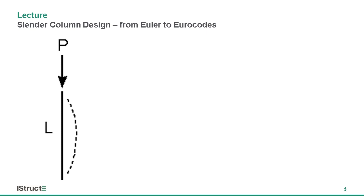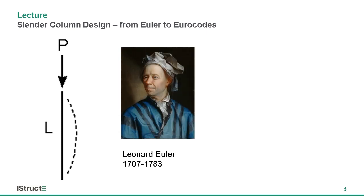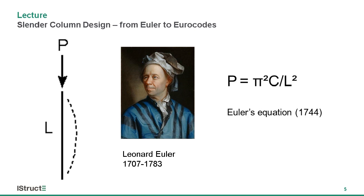The other difference with buckling is that whereas bending and crushing are related to the strength of the material, buckling is related to the stiffness of the material. To understand buckling, the first person we have to go back to is Leonard Euler — a very clever mathematician responsible for many fundamental advances in mathematics and physics. In 1744, he worked out the equation for the buckling strength of an axially loaded slender column: π²EI/L². That's the fourth of the basic equations.